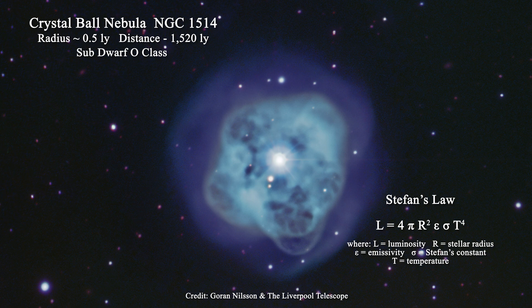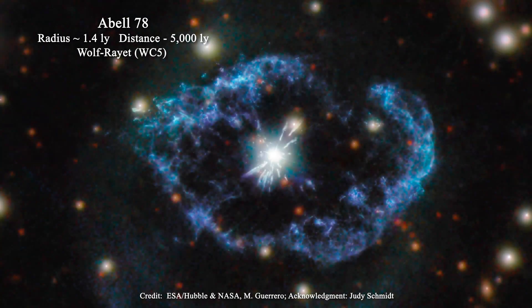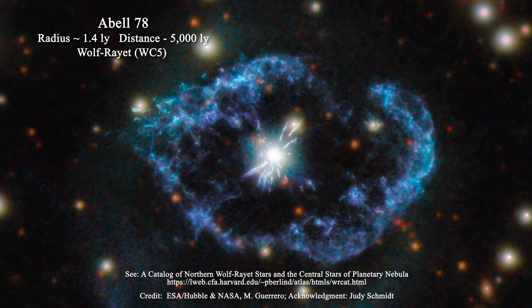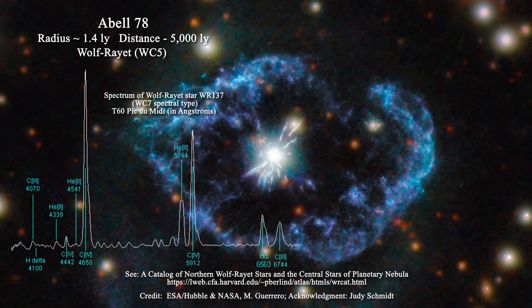In addition to white dwarfs and sub-dwarf O-class stars, Wolf-Rayet stars can also constitute the central stars of planetary nebulae. Wolf-Rayet stars are amongst the most magnificent objects in astrophysics, because they are characterized by powerful emission lines and their spectra take on a distinctive appearance. Wolf-Rayet stars do not display a continuous spectrum — or if present, that spectrum is so weak as to be essentially absent. As a result, Wolf-Rayet stars do not display Fraunhofer lines and cannot be placed on the HR diagram.